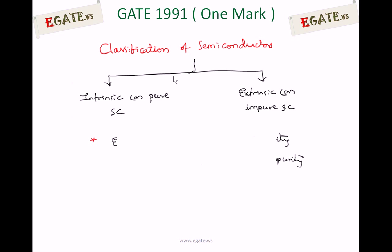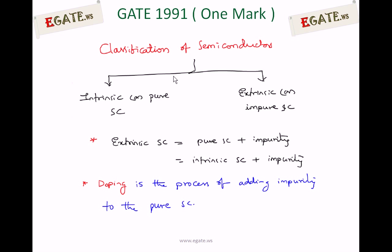Extrinsic semiconductor is nothing but a pure semiconductor plus impurity. When you add impurity to an intrinsic semiconductor, it is converted into an extrinsic semiconductor. The addition of impurity to an intrinsic semiconductor is called doping. Doping is the process of adding impurity to a pure semiconductor.